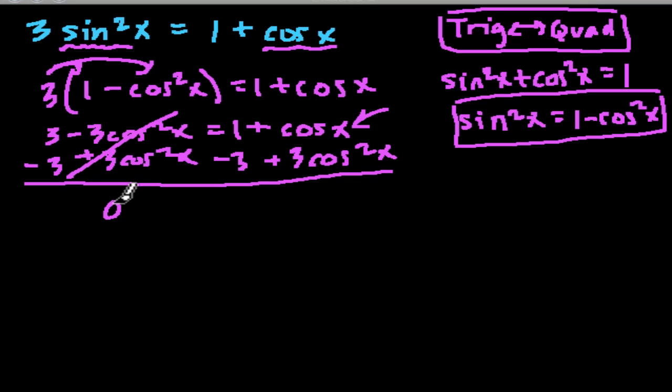Here this is 0. 3 minus 3 is 0, and negative 3 cosine squared of x plus 3 cosine squared of x is 0. And that equals, well here we have 1 minus 3, and that's negative 2. I'm going to leave some space here. And we have 3 cosine squared of x plus cosine of x.